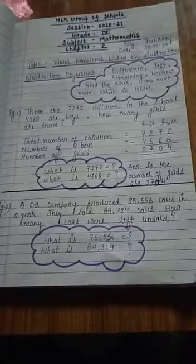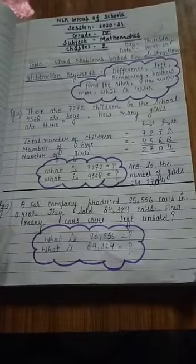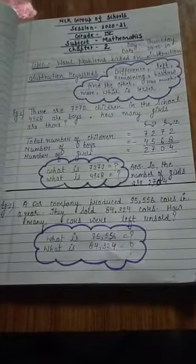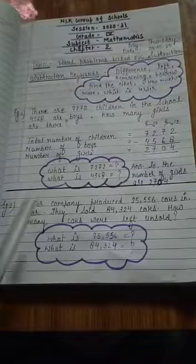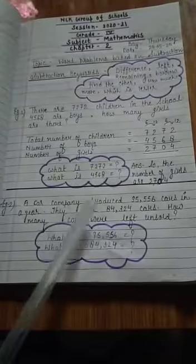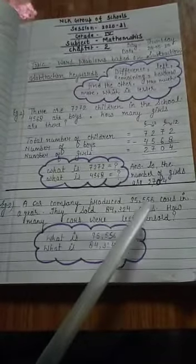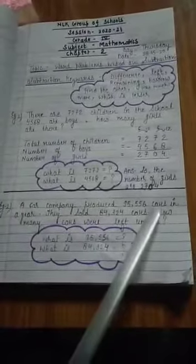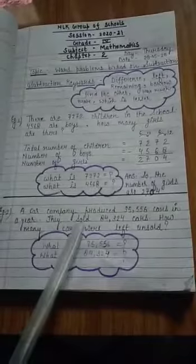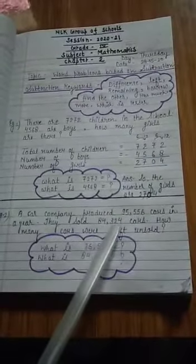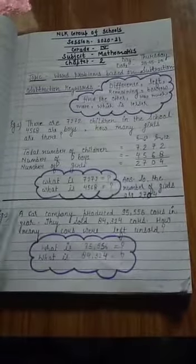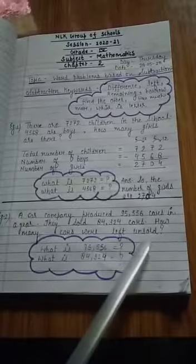Now we will solve one more subtraction story problem. So let's take example 2. Here, a car company produced 95,556 cars in a year. They sold 84,324 cars. How many cars were left unsold?